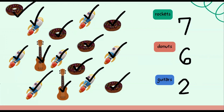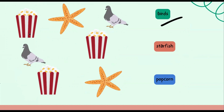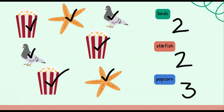Let's move to our next set. In this set we have birds, starfish, and popcorn. First we're going to count the birds. Are you ready? One, two — we have two birds. Let's count the starfish: one, two — there are two starfish. Now we're going to count the popcorn: one, two, three. We have a total of three popcorn. In this object set we have two birds, two starfish, and three popcorn. You guys are doing great!